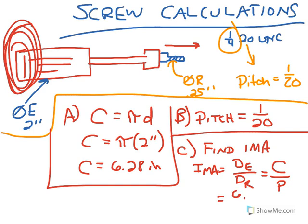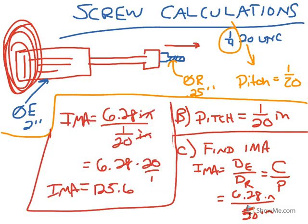Circumference, we figured out, was 6.28 inches, and the pitch is 1/20th of an inch. I should have labeled that up here. So if you divide those, I'm running out of space, which I apologize.